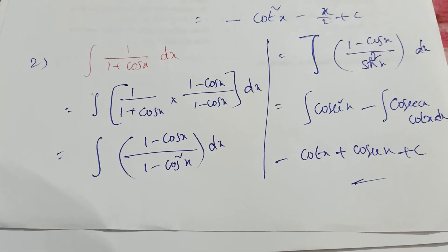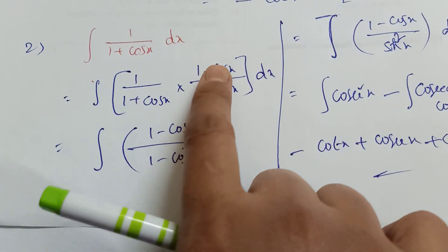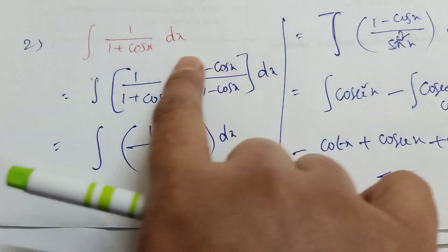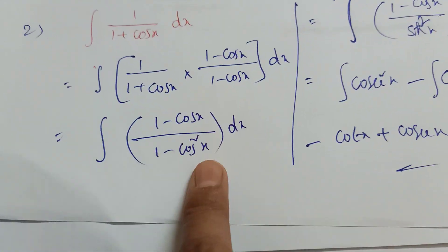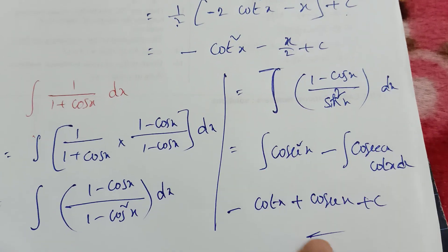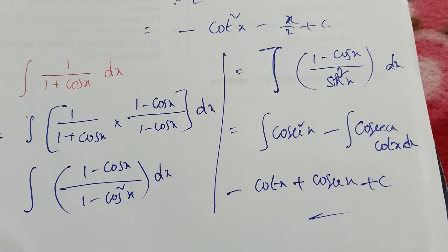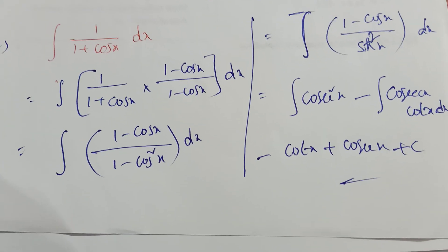Just remember: for 1/(1 + cosx), the opposite term is (1 - cosx). Do rationalizing and you will easily get the value. This is a very important model problem.